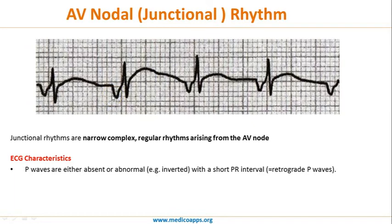To summarize, we have seen three cases: first, a prolonged PR interval indicating first-degree heart block; second, a short PR interval with slurred QRS uptake (delta wave) pointing to WPW syndrome, or short PR with no delta wave pointing to Lown-Ganong-Levine syndrome; and finally, a short PR interval with an inverted or retrograde P wave, which represents AV junctional rhythm.